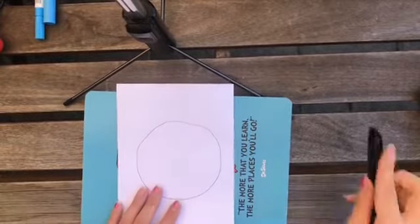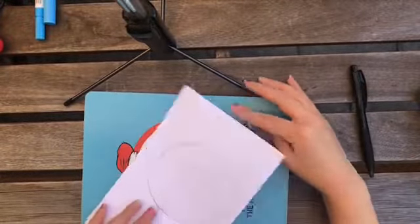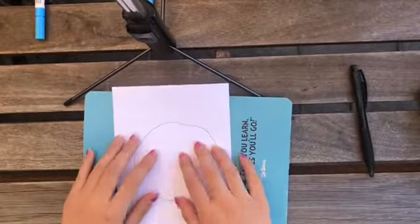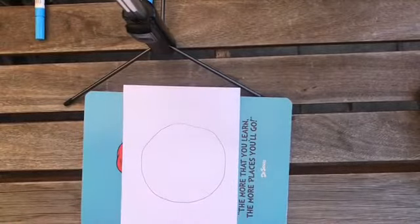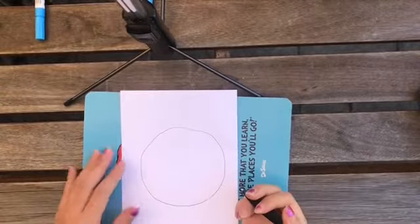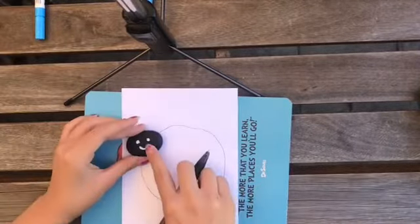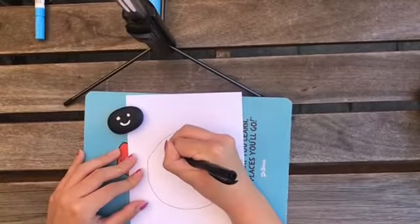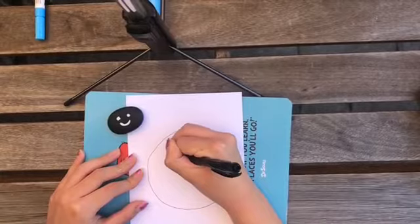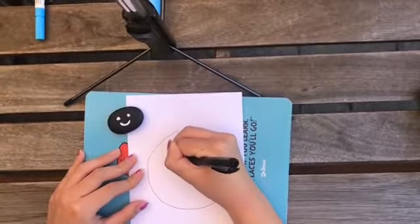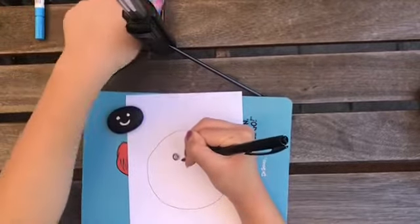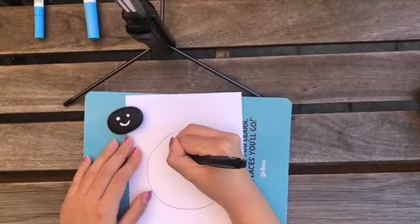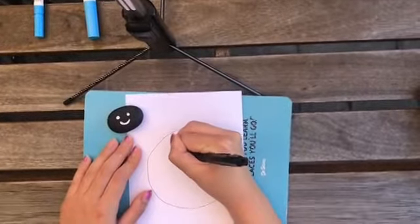And now you can choose whichever one you want to start with. I'll just do this one because I'm already here. And you are going to draw your two faces. So like I said, I did the happy face one first, so I'll do it like this. And if you have other color materials, you can use those as well. Like if you have markers or something that you want to use for your face, go ahead. Because on paper, your markers will work.